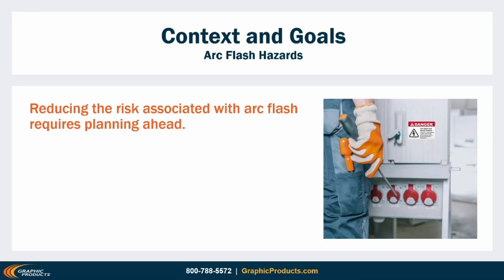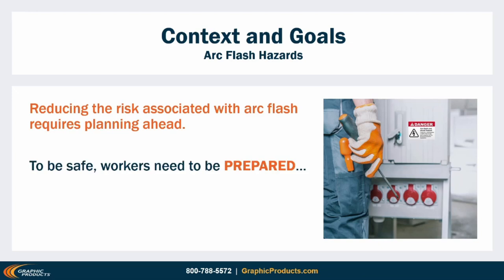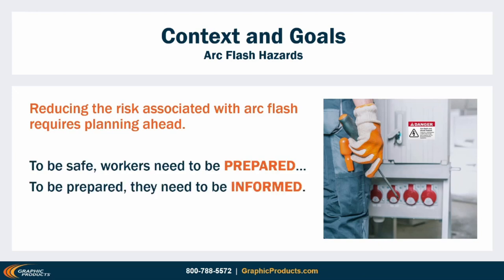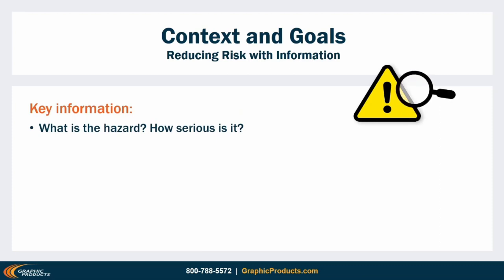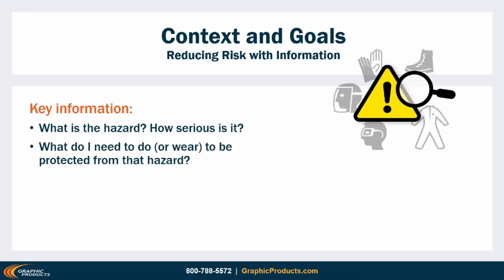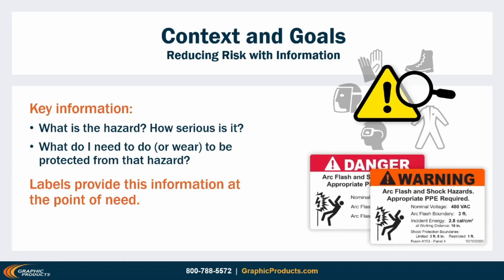So how can we reduce the risk involved? Arc flashes happen very quickly — by the time a flash begins, it's too late to change what you're doing, so any steps we take to reduce risk have to be done in advance. To be safe, workers need to be prepared, and to be prepared, they need to be informed. They need to know that a hazard exists, what kind it is, how serious it is, and how to protect themselves, which may include safe work procedures or requirements for PPE. The best way to provide that information will often be with a sign or label posted to be clearly visible before work begins. The right knowledge can save lives, and that's what these labels and signs are for.